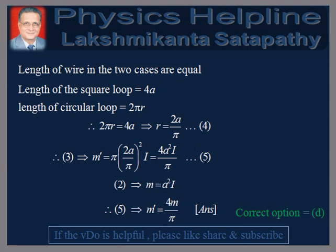We know that the length of the wire in the two cases are equal. We have length of the square loop = 4A and length of the circular loop = 2πR. Therefore, 2πR = 4A, which implies R = 2A by Pi.